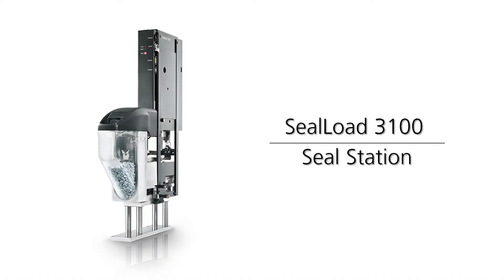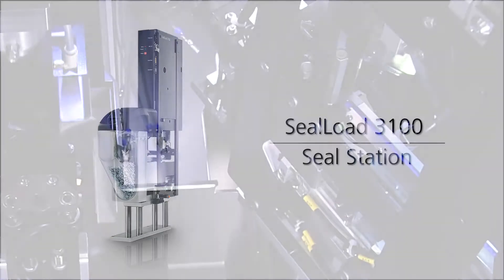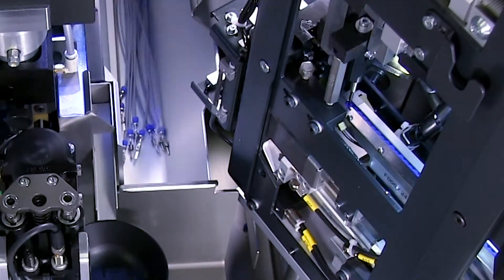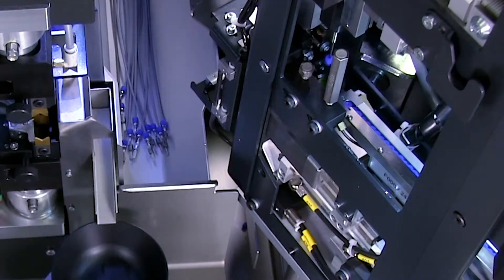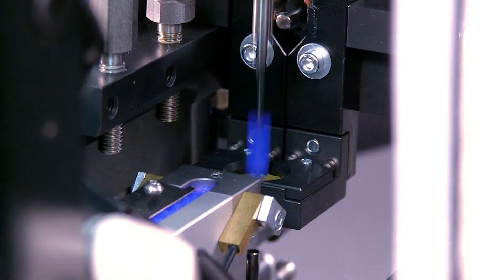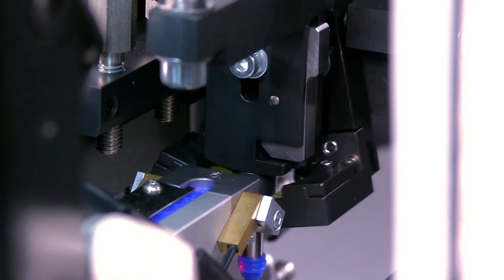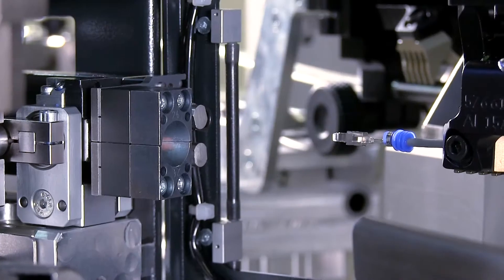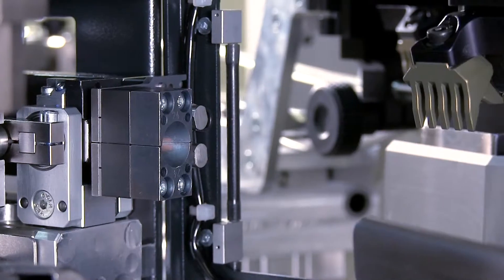The Seal Load 3100 is the latest generation of seal loading stations designed to fit on all Crimp Center series machines. This optional processing station applies seals to both stripped or unstripped wires, and the optimized design offers faster processing speeds and a broader range of seal processing capabilities.